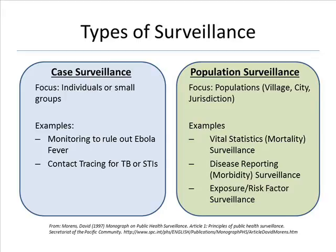Slide 17: These are the types of surveillance — case and population surveillance. First, we will review case surveillance. It focuses on individuals or small groups. Examples include monitoring to rule out Ebola fever, or contact tracing for TB or STIs.